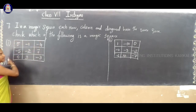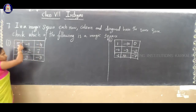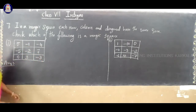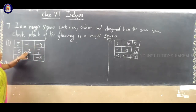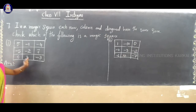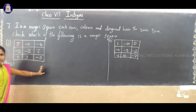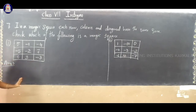In this square, 5, minus 2, minus 3 are one diagonal. One more diagonal is: minus 4, minus 2, 0. So, you have to check each row, column and diagonal. If you get the same sum — same answer in each row, in each column and in each diagonal — then we can say that the given square is a magic square.